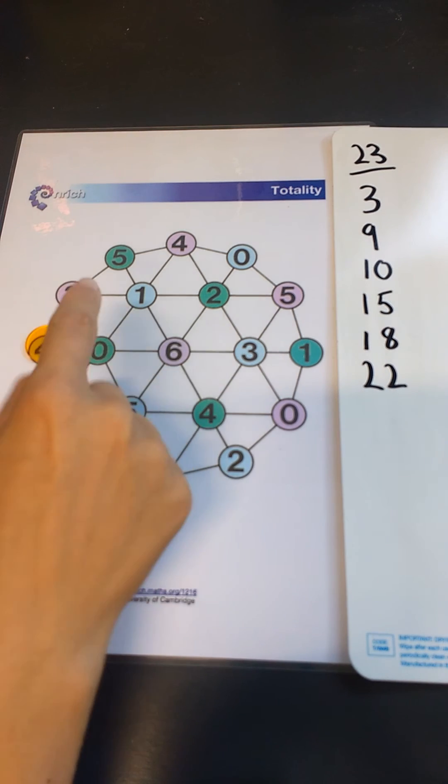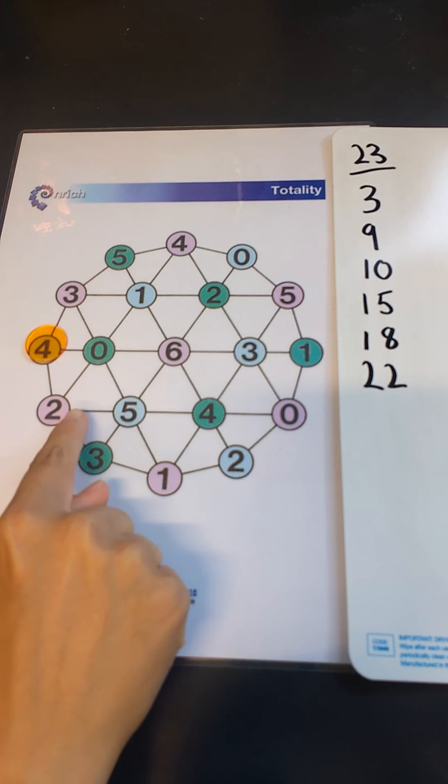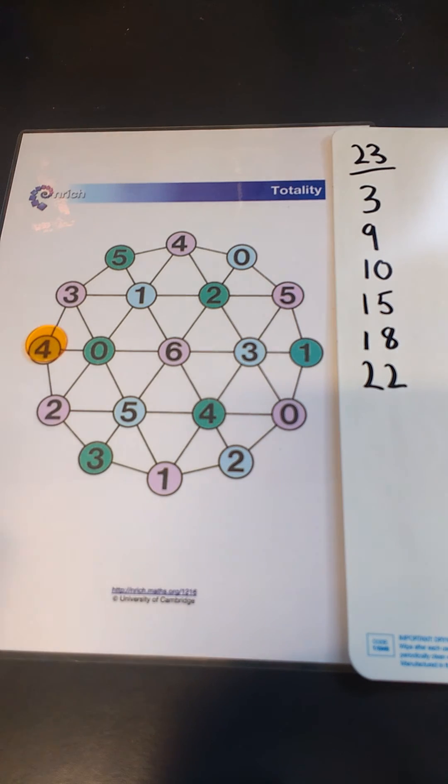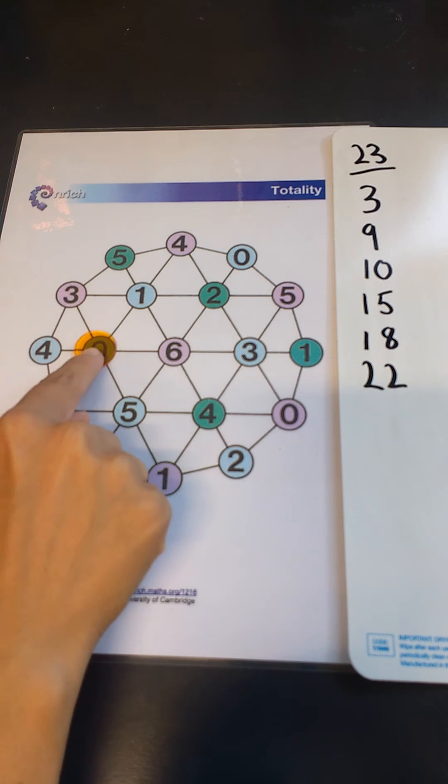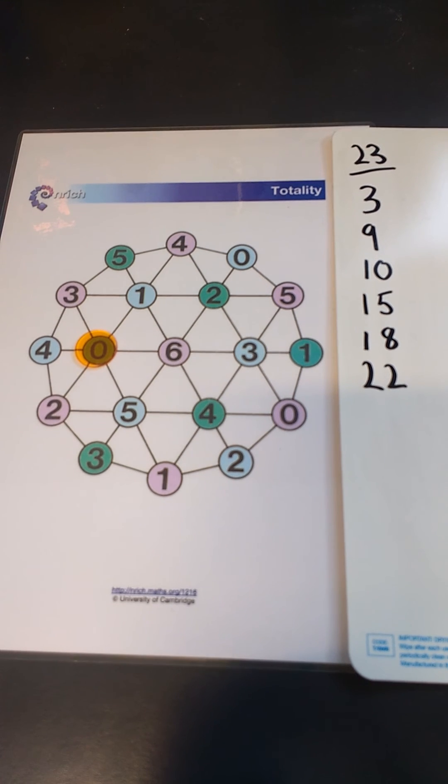Okay, so it looks like if I go up to the 3 or down to the 2, we're going to be bust. So I don't have a choice but to go across to this 0. Okay, so our total is still 22.